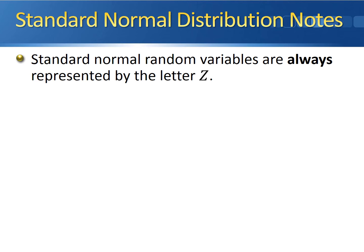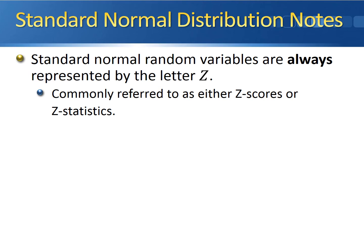A couple of important points about the standard normal distribution: standard normal random variables are always represented by the letter Z. We reserve Z for standard normal random variables — anytime you see the capital letter Z, that tells you you're working with a standard normal random variable. These are commonly referred to as either Z scores or Z statistics — two terms for the exact same concept.